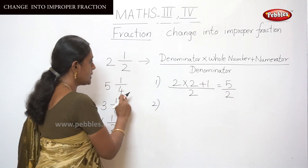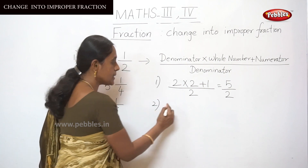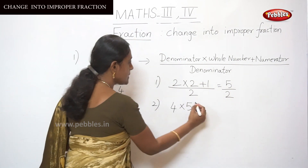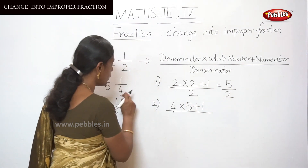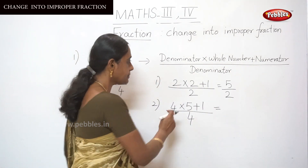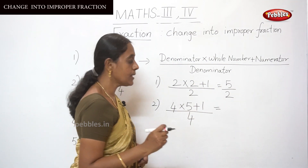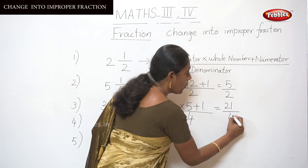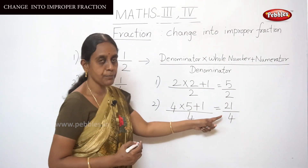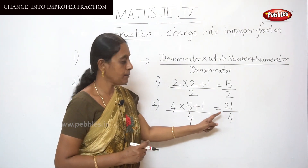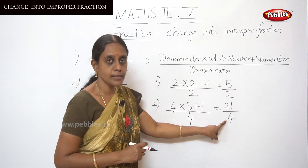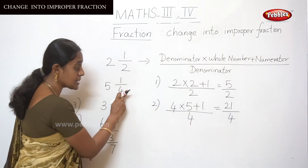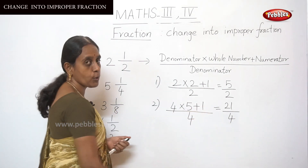The second sum uses the same formula. Here the denominator is 4, into the whole number 5, plus the numerator 1, divided by the denominator 4. The answer: 4 × 5 = 20, and 20 + 1 = 21, divided by 4. So the answer is 21 by 4. Is this proper or improper? It is an improper fraction because the denominator is smaller than the numerator. The answer 21 by 4 is the change of this mixed fraction into an improper fraction.